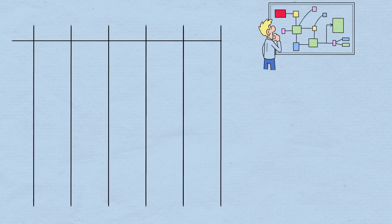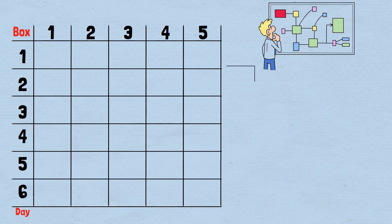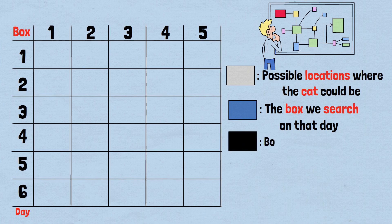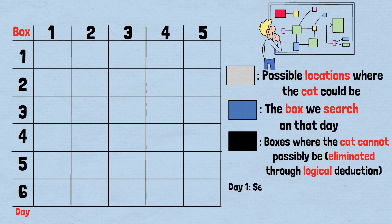Let's trace through our strategy with a visual representation. In this grid representation, I'll mark different types of boxes to track our logical deductions. Gray rectangles: Possible locations where the cat could be. Blue rectangles: The box we search on that day. Black rectangles: Boxes where the cat cannot possibly be, eliminated through logical deduction. Day 1: Search box 2.